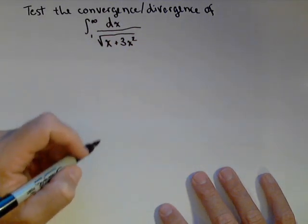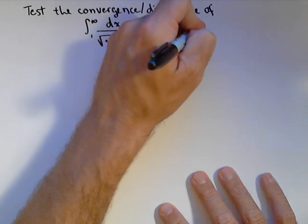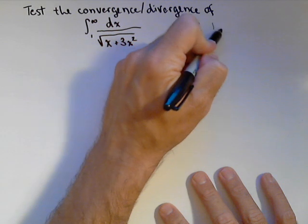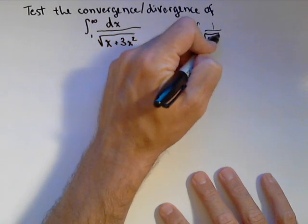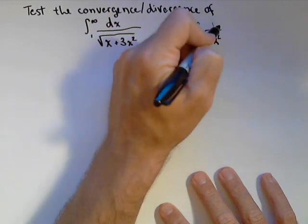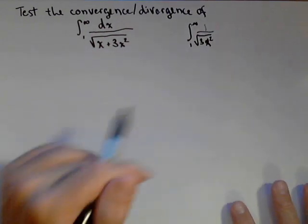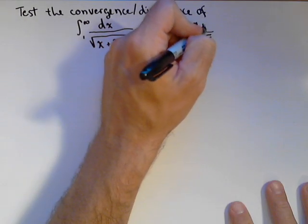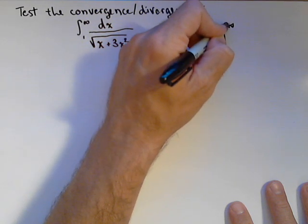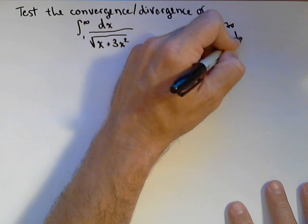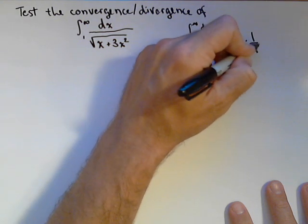So our goal would be to compare this maybe to one over square root of three x squared. So we're gonna compare to the improper integral, at least initially, we may change, one over square root of three x squared from one to infinity. Well, that is actually one to infinity of one over root three times one over x dx.